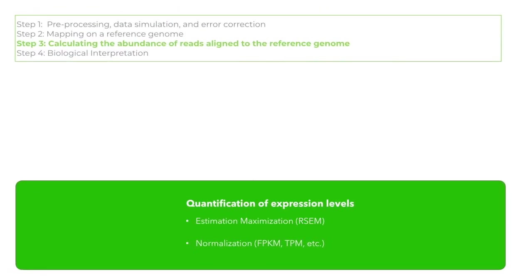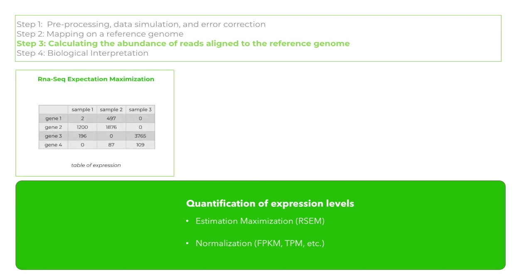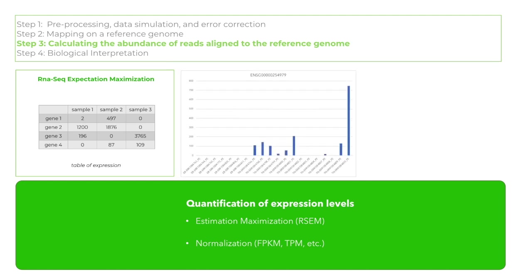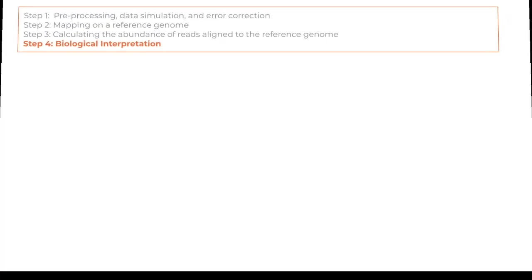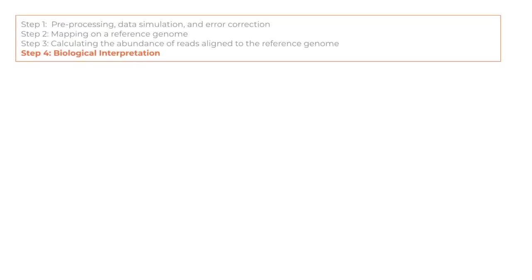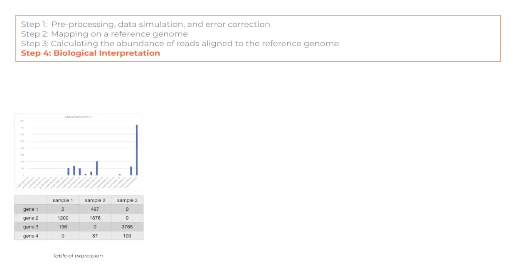After the preprocessing and mapping steps, expression values for genes and isoforms are generated by a complex algorithm that seeks to detect statistically significant abundances of reads. These are quantified and displayed in an expression table. The counts of expression can be an FPKM or TPM. After the table of expression is prepared, we can analyze the table to study variability between samples or perform biological interpretation of specific genes or isoforms.